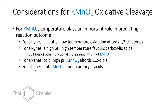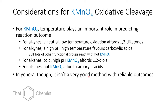If you do alkenes with hot KMnO4, you're going to further oxidize them to carboxylic acids, as well as ketones if they're further substituted. In general, I wouldn't recommend using potassium permanganate if you have other options at your disposal, because side reactions can often occur. And even if you do form your desired product, if other products are formed, it can be challenging to separate and isolate the desired product.